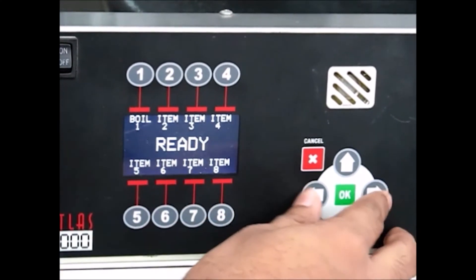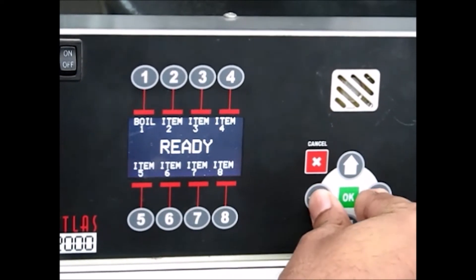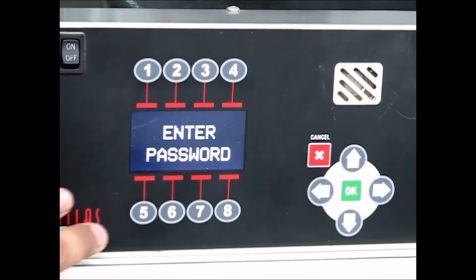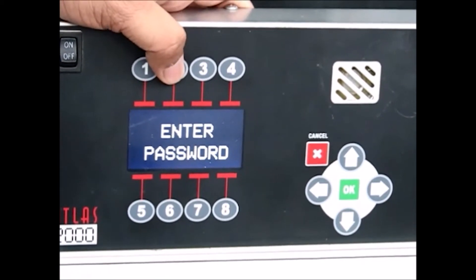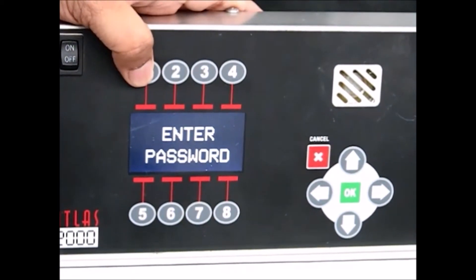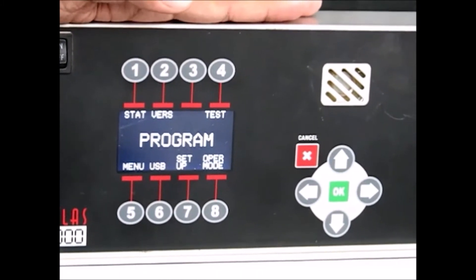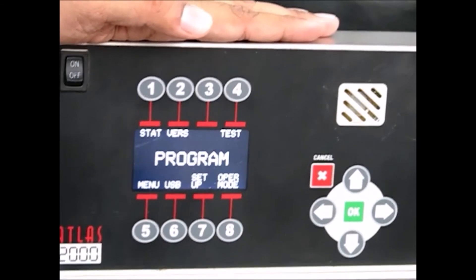To enter the program mode, press the left arrow button while also pressing the right arrow button. This will prompt enter password. Enter the password as 2 1 2 1. You will now be in program mode.